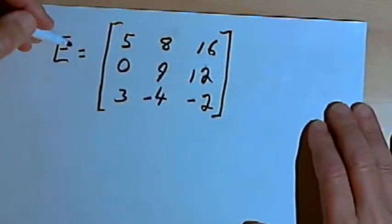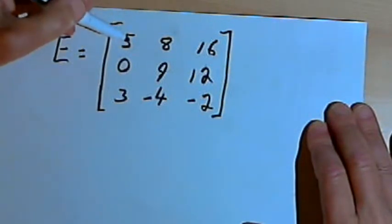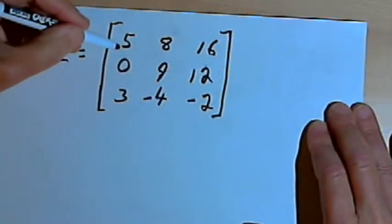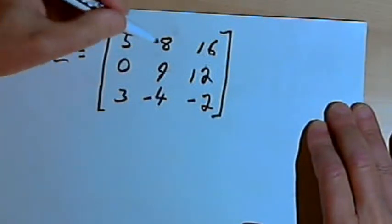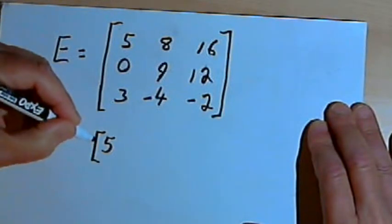Let's take a look at matrix E. So matrix E is a square matrix, it's 3 by 3. I can say that there are matrices within this matrix. I can say that there's a row matrix. If I took the first row, 5, 8, and 16, I could call that a row matrix.